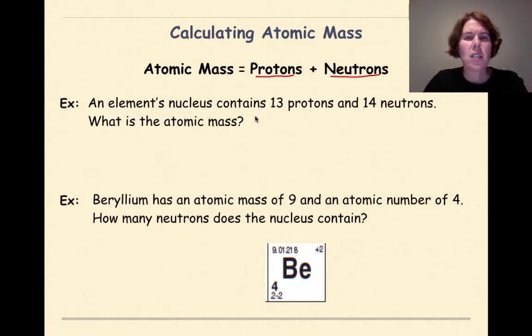So I'm going to take my 13 protons and my 14 neutrons, and all I'm going to do is add these two numbers together. So I'm going to get 27. So the atomic mass would be 27u.